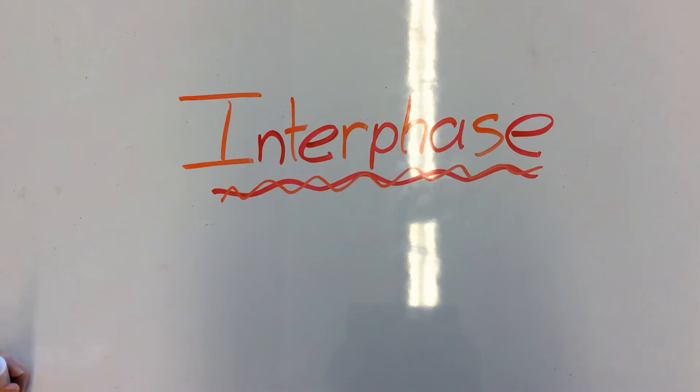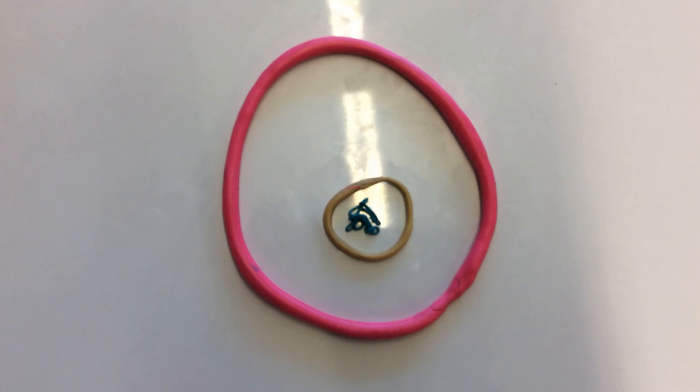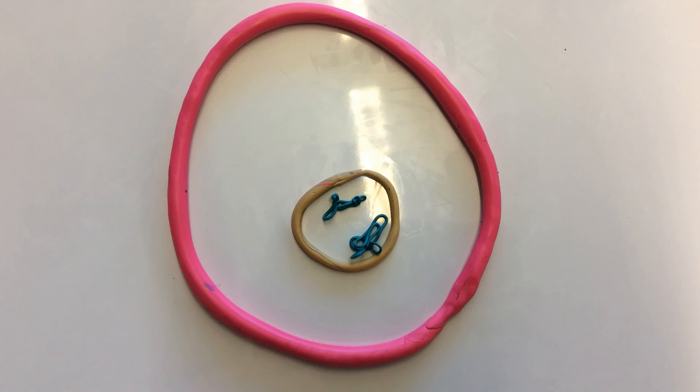There are three parts for interphase: G1, S, and G2. G1 is when the cell makes proteins needed for DNA replication. S is when the chromosomes are replicated and attached to sister chromatids. G2 produces more protein for mitosis.